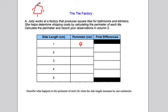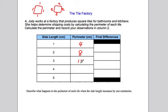If the side length is 2, then the perimeter is going to be 8. And if it's 3, then it's going to be 3 plus 3 plus 3 plus 3, which is 12. Perimeter of a square with side length 4 would be 16, and if the side length is 5, it'll be 20.